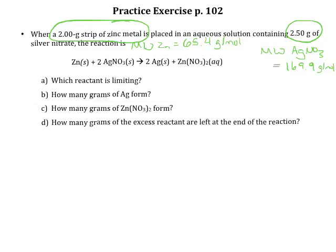Again, we need this information because we can only put moles into the ICE table. So let's go ahead and get that ICE table set up, and then we'll get started doing the conversions we need to do. Anytime I do an ICE table, I start by rewriting the equation. So I know that I've got zinc metal reacting with two moles of silver nitrate.